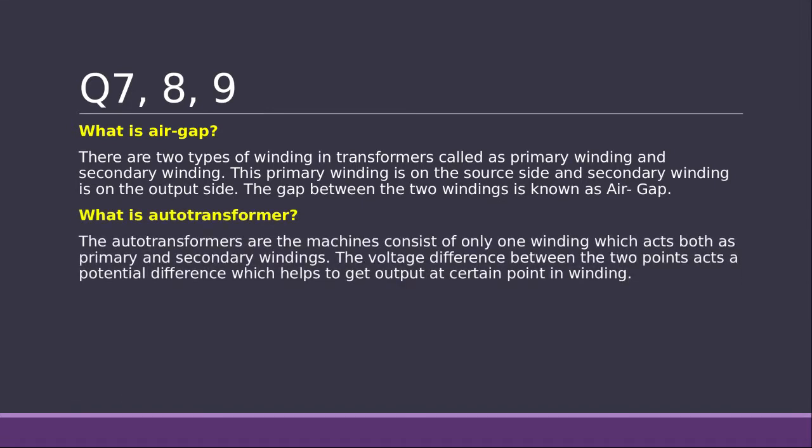What is auto transformer? Auto transformers are the machine that consists only one winding which will act as both primary and secondary winding. The voltage difference between these two points act as a potential difference which will help you to get the output at certain point of the winding. You need to say that auto transformers are special and they have got only one winding that winding will act as primary and secondary windings. That is enough.